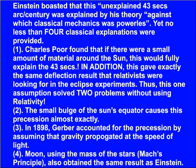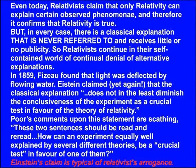Secondly, the small bulge of the Sun's equator causes this precession almost exactly. Thirdly, in 1898, Gerber accounted for the precession by assuming that gravity propagated at the speed of light. And fourthly, Moon, using the mass of the stars — known as Mach's principle — also obtained the same result as Einstein. Even today, relativists claim that only relativity can explain certain observed phenomena, and therefore it confirms that relativity is true. But in every case, there is a classical explanation that is never referred to and receives little or no publicity. So relativists continue in their self-contained world of continual denial of alternative explanations.